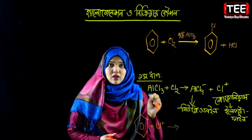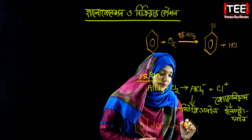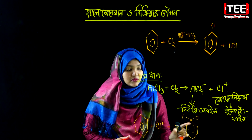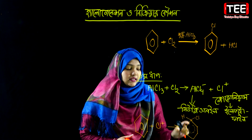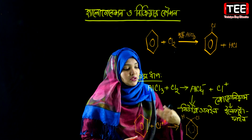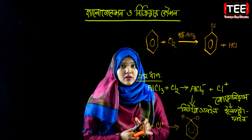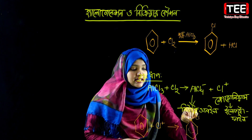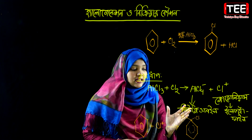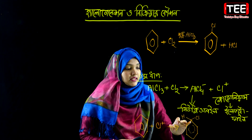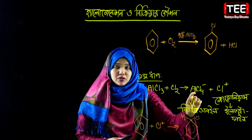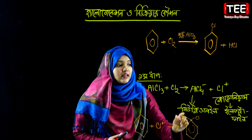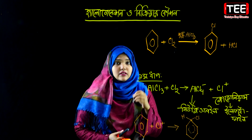The benzene ring moves toward the electrophile and together they form a complex — this is the benzene-electrophile complex. However, this complex is unstable because the position of hydrogen within the ring is disturbed, and the system tries to restore its stable aromatic state.